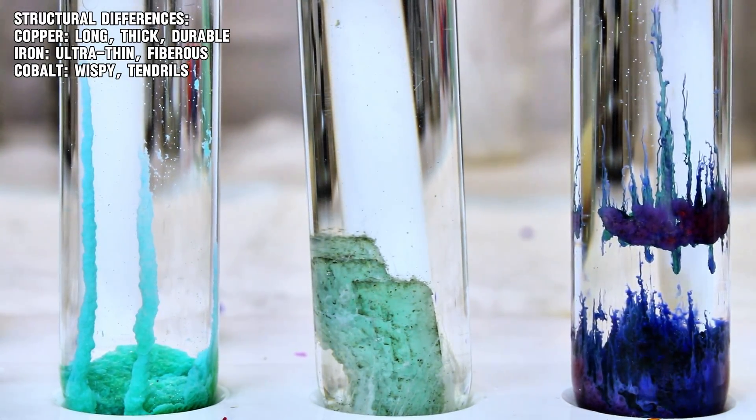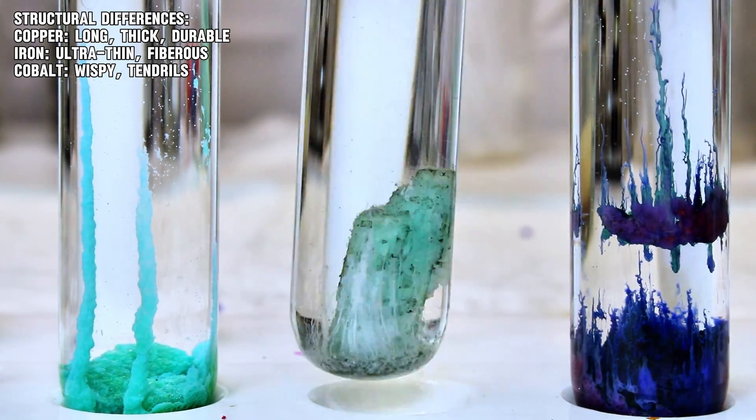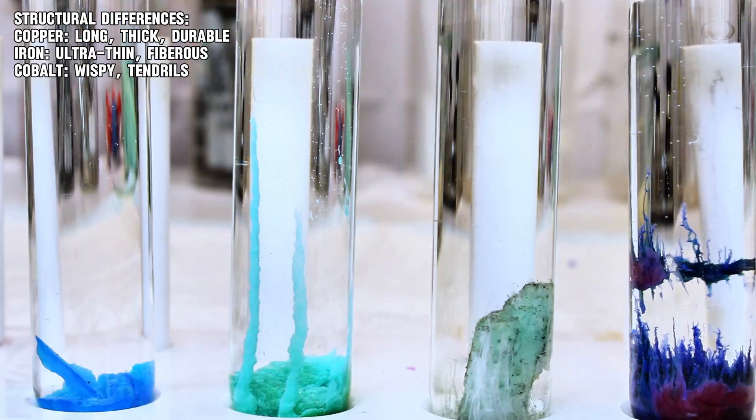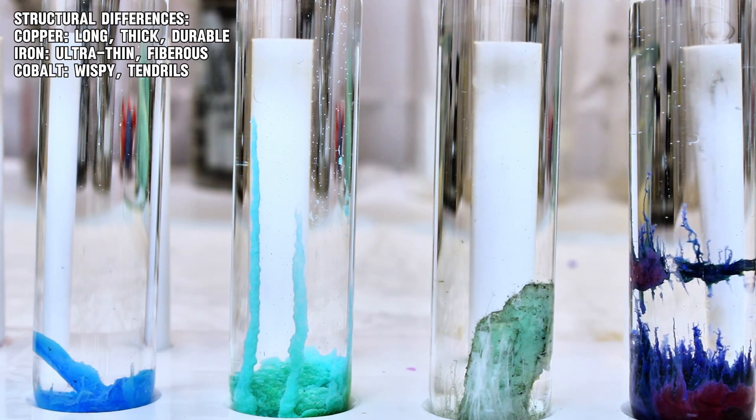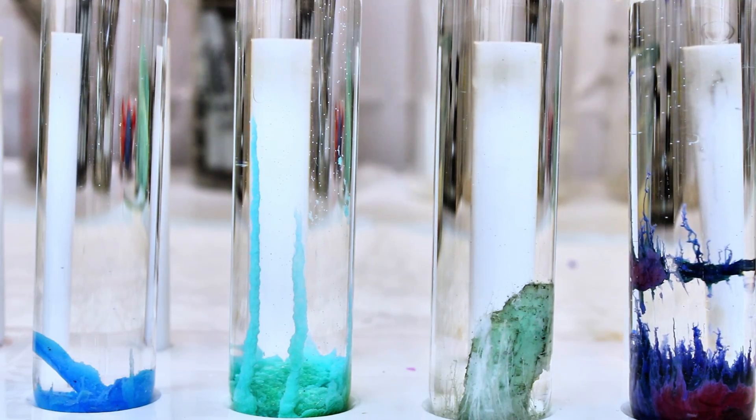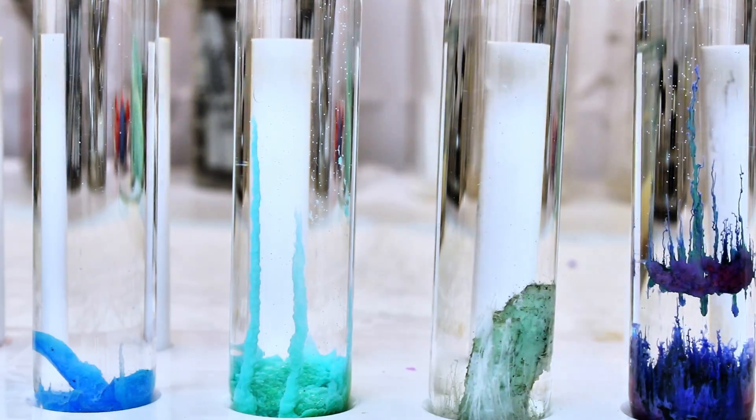For example, if you look at any of my samples here, copper chloride and sulfate tended to form fewer stalactites that were each fairly long and durable. Iron sulfate, on the other hand, tended to form ultra-fine stalactites that were almost hair-like and resembled asbestos in a way.